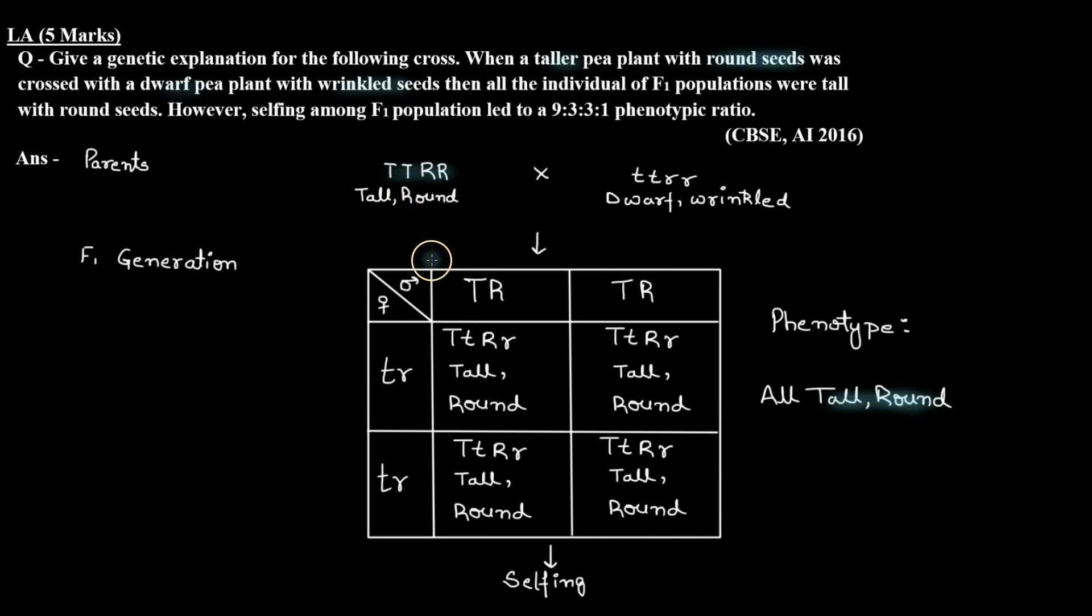Now let's check the gametes. The capital T, capital T, capital R, capital R plant will produce capital T, capital R gametes. And the small t, small t, small r, small r plant will produce small t, small r gametes.